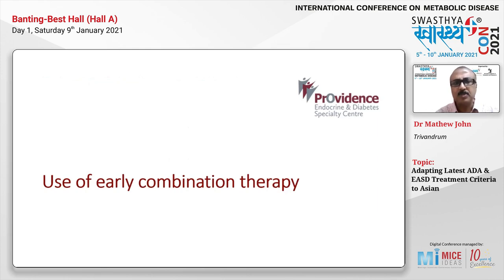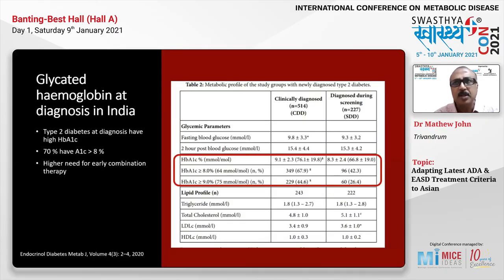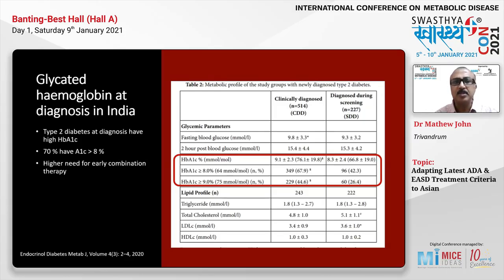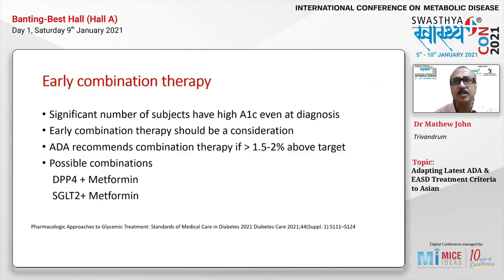The second aspect is early combination therapy. As noted, in the Asian subcontinent there is late diagnosis of diabetes, with most patients having relatively less access to healthcare and presenting much later in the course. A recent study from Chennai shows that clinically diagnosed patients have a baseline A1C of around 9%, and 70% of patients have an A1C above 8%. So by the time patients are diagnosed, their A1Cs are quite high.